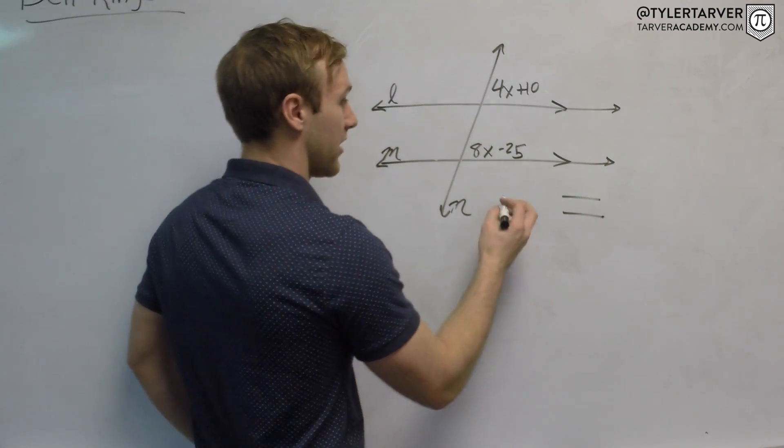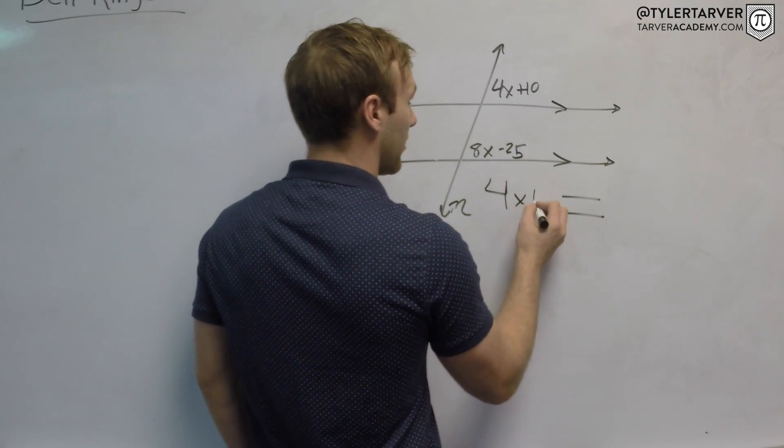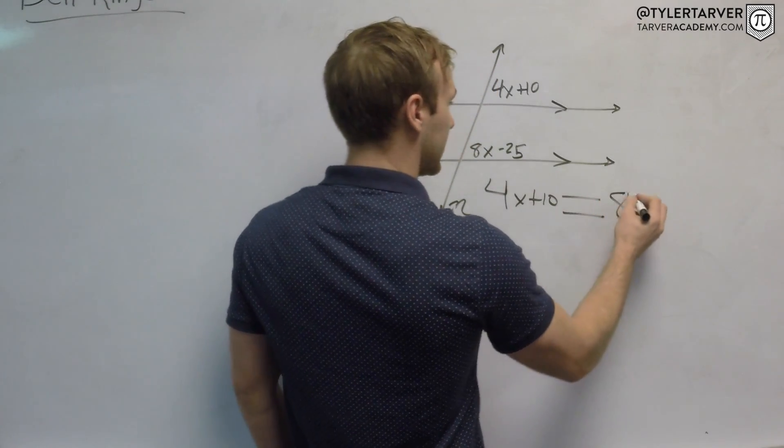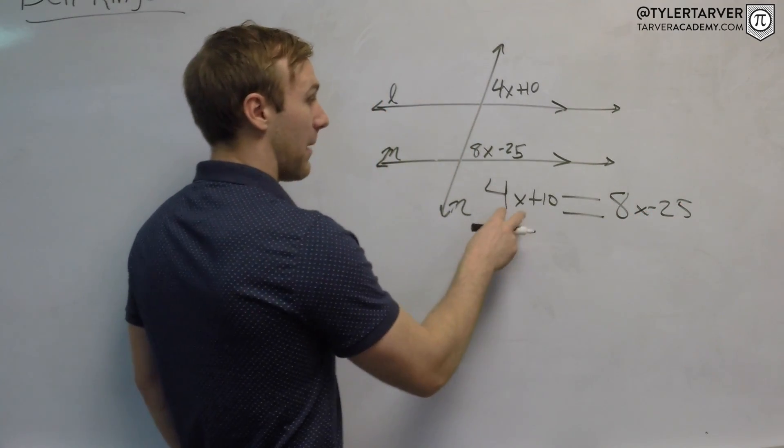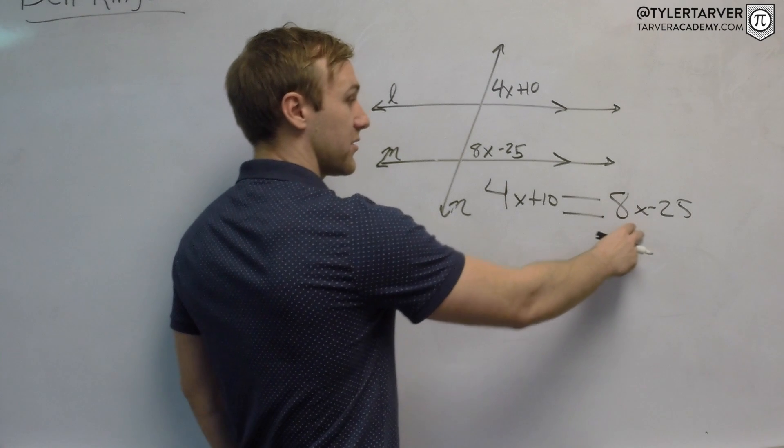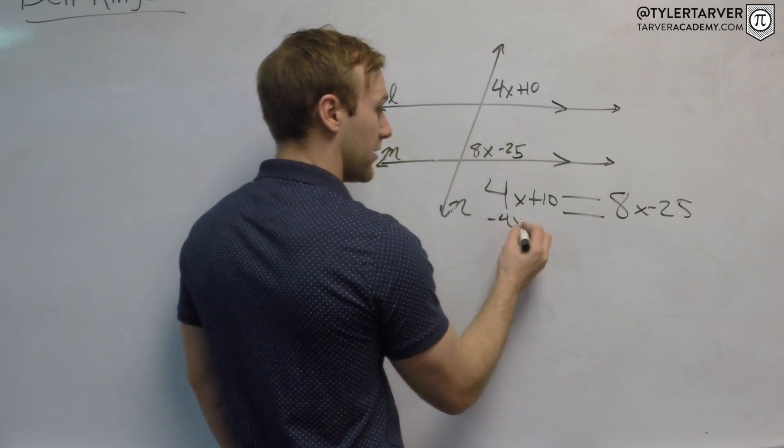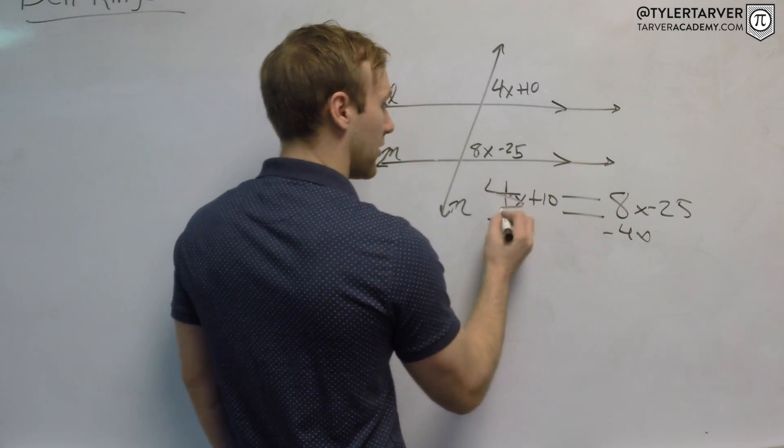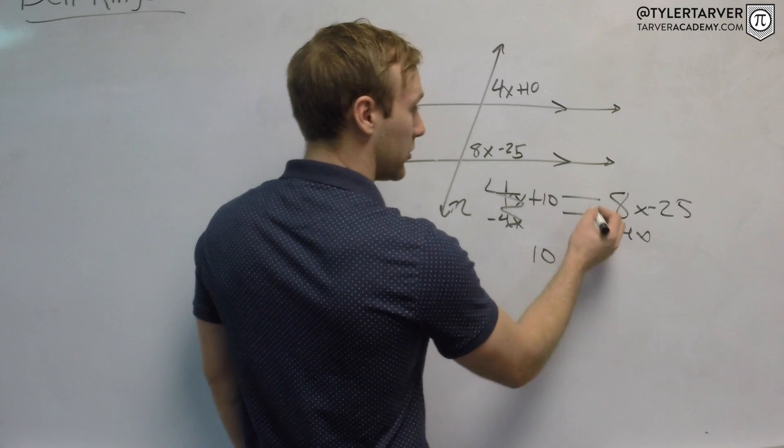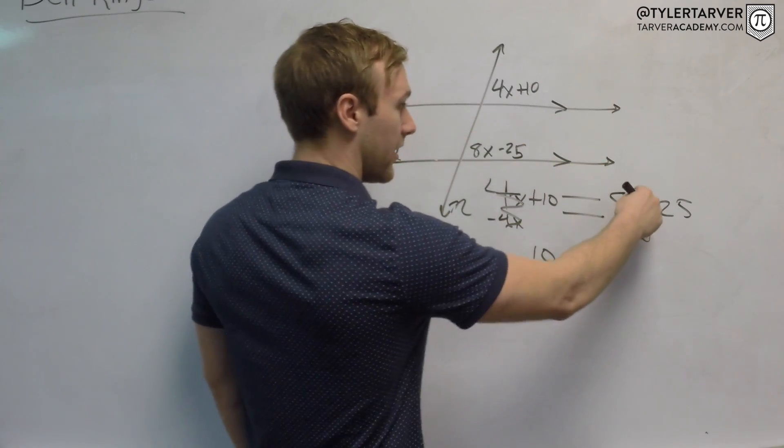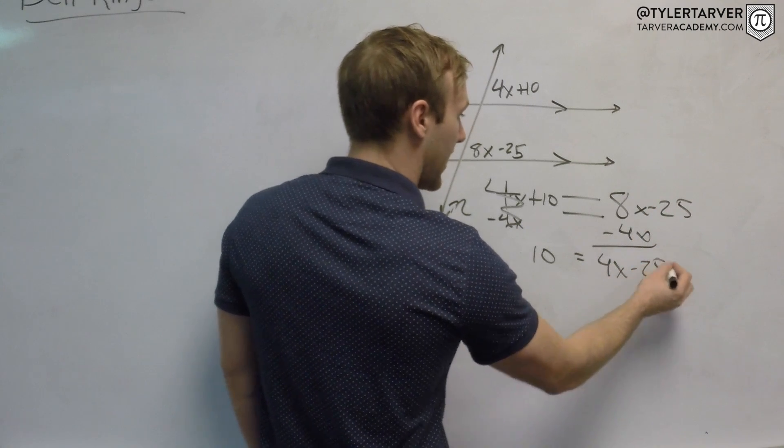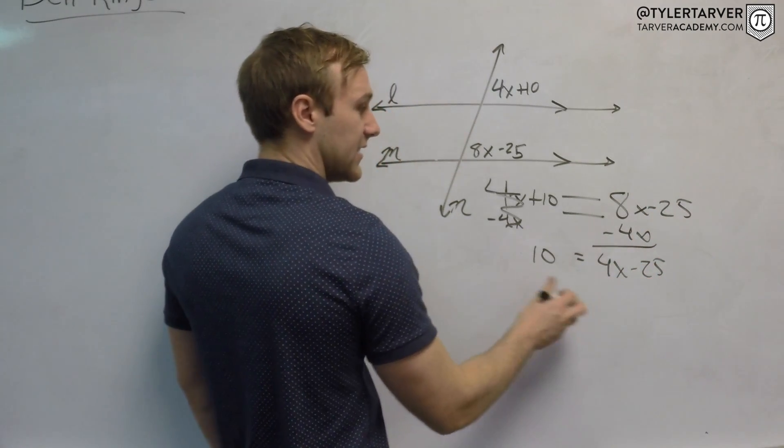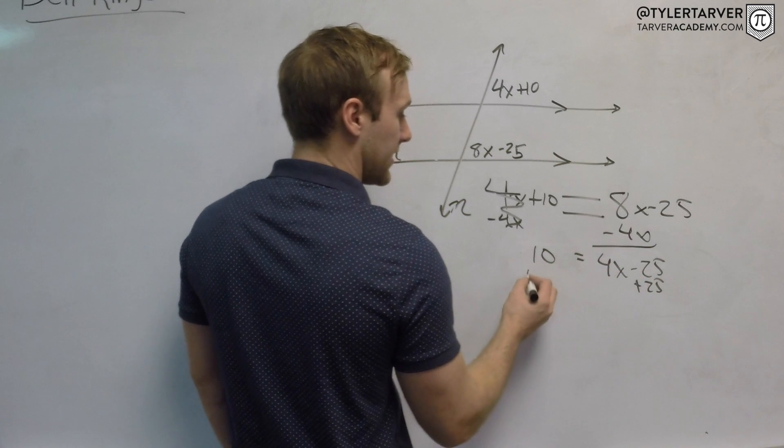So we just solve it like a regular equation: 8x - 25. Let's solve it. I like to get my lower variable to the other side first, so I'm going to subtract 4x from both sides. That goes away - that is 10. Bring everything straight down: 8x - 4x is 4x, then bring that negative 25. The opposite of subtracting 25 is adding 25, so I'm going to do that to both sides.